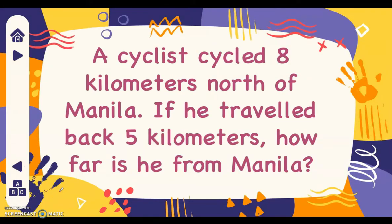Let's have another problem. A cyclist cycled eight kilometers north of Manila. If he traveled back five kilometers, how far is he from Manila? If we analyze the problem, our reference point is Manila. Going north is positive eight, and going back is negative five since he traveled back five kilometers.